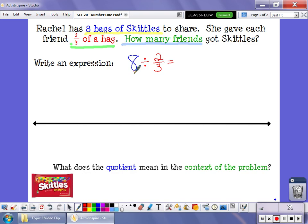Now, remember, to use a number line, we need a number line that goes up to the whole number we're trying to divide. So from zero to eight. And each section on this represents a bag of Skittles.